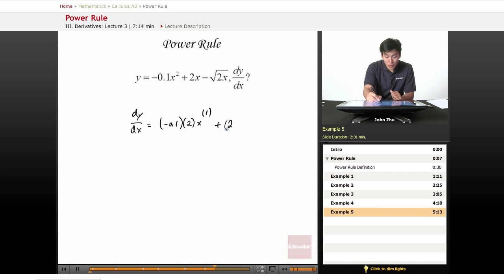plus 2 times x. n is 1 in this case, so x to the 1 minus 1 is 0.